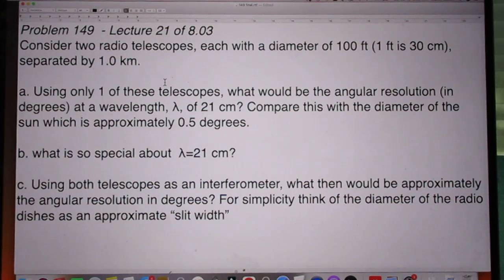Third question. Using both telescopes as an interferometer, what then would be approximately the angular resolution in degrees? For simplicity, think of the diameter of the radio dishes as an approximate slit-width.